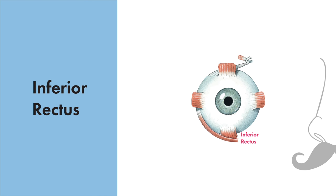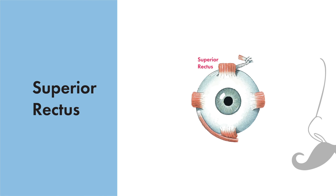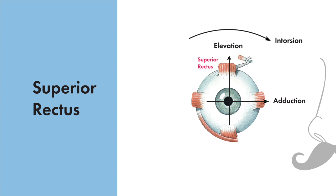The inferior rectus results in a primary depression, secondary extorsion, and a tertiary adduction, resulting in a movement that is down and in. The superior rectus results in a primary elevation, secondary intorsion, and a tertiary adduction, resulting in a movement that is up and in.